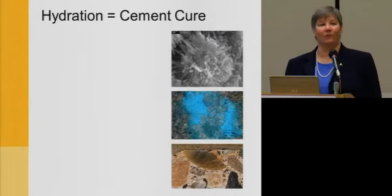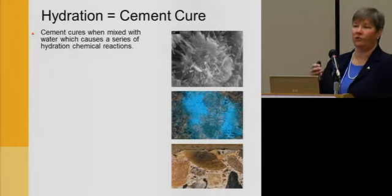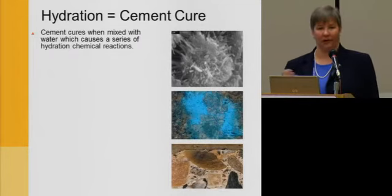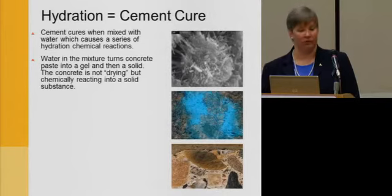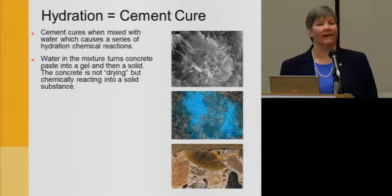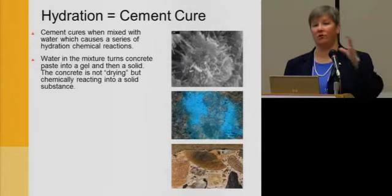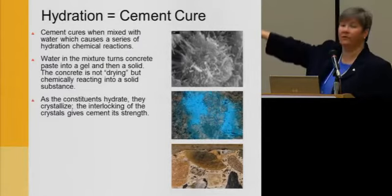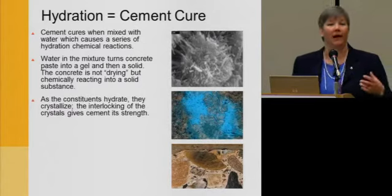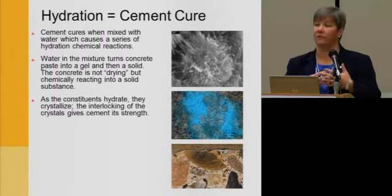Hydration is what we would typically refer to as cement cure. When we talk about cement hardening or curing, all of that is due to hydration. Cement cures when mixed with water, which causes a series of chemical reactions that ultimately hydrate the slab and bring its strength. The water turns the concrete paste into a gel, and that gel eventually turns into a solid. During that time the concrete is not drying — it is curing as that chemical reaction slowly turns those gel particles into a solid, creating a crystalline structure that forms the matrix giving concrete its strength.